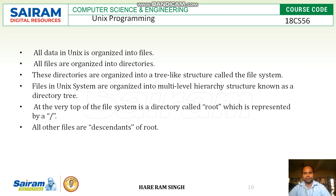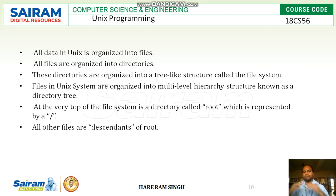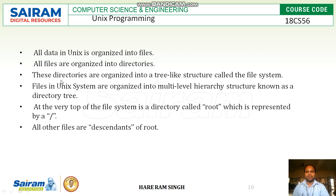As we know, in the Unix operating system all data will be stored in files. There will be millions of files in the Unix operating system, and all these millions of files are organized in a proper, hierarchical way. All data in Unix is organized into files; all files are organized into directories. Data will be present in a file, and files will be present in the directories. These directories are organized into a tree-like structure called the file system.